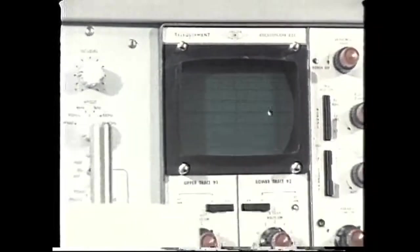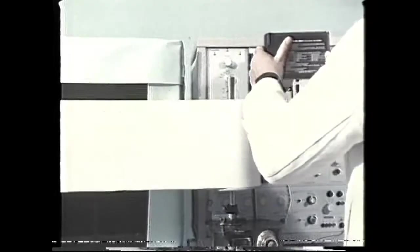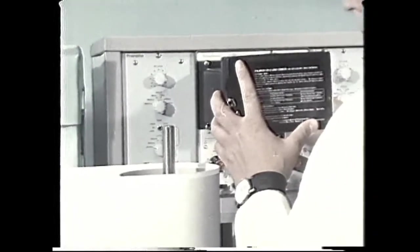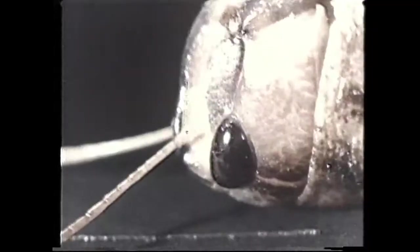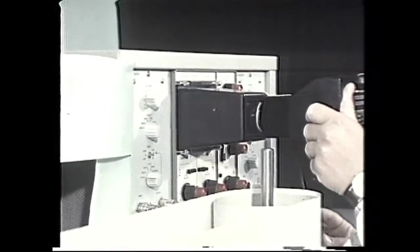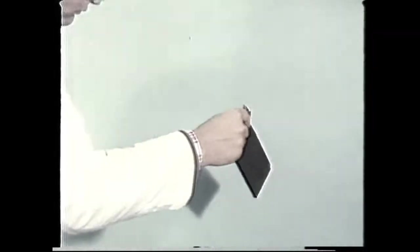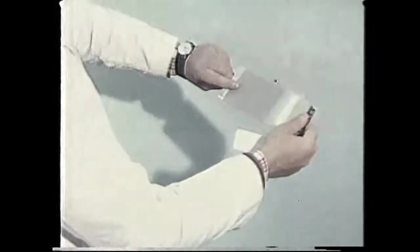For a thorough quantitative investigation many runs are carried out and each time the trace is photographed like this using a Polaroid camera. This is a run with the ten degree spot. And we get a picture like this.